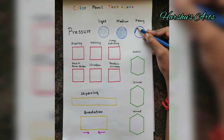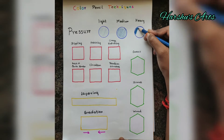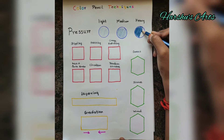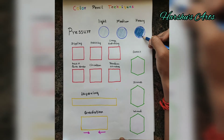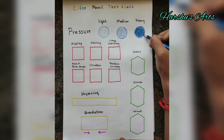Pressure is heavy. Pressure is dark. These are the three types of pressure — light, medium, and dark heavy.